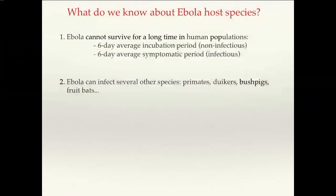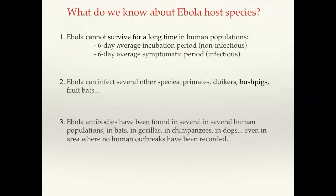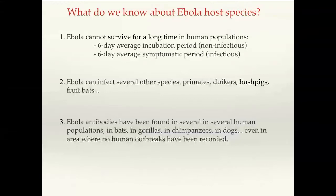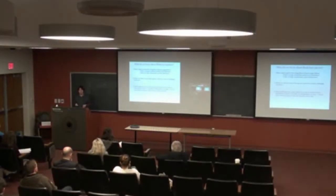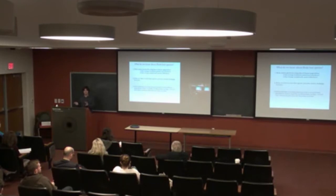Ebola antibodies have been found in several human populations, including populations that have never been affected by symptomatic Ebola outbreaks. For example, studies among the Bayaka people in the Central African Republic found that up to 13 or 14% of the Bayaka had antibodies against Ebola. In contrast, non-Bayaka people in the same area who rely less on the forest showed only about 4% seropositivity.